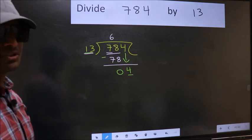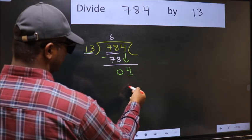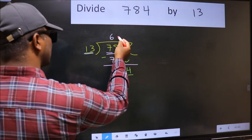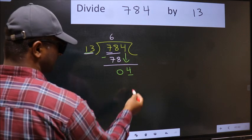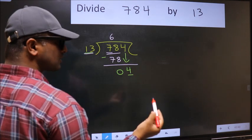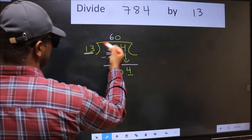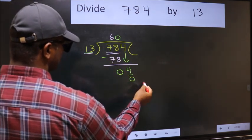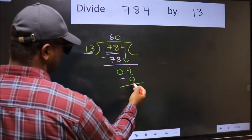Instead, what you should think of doing is, which number should we take here? If I take 1, we will get 13. But 13 is larger than 4. So what we should do is, we should take 0. So 13 into 0, 0. Now we should subtract. 4 minus 0, 4.